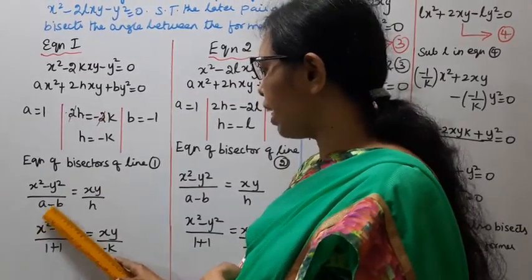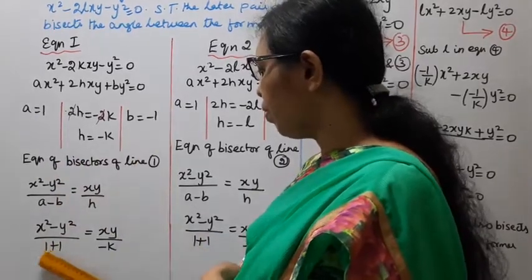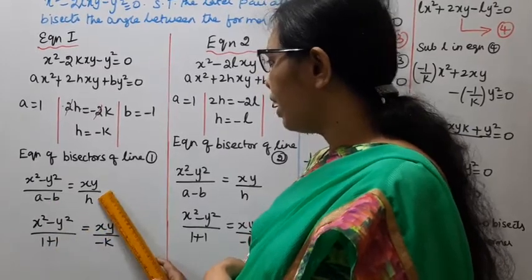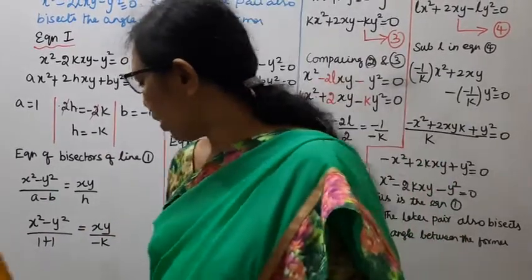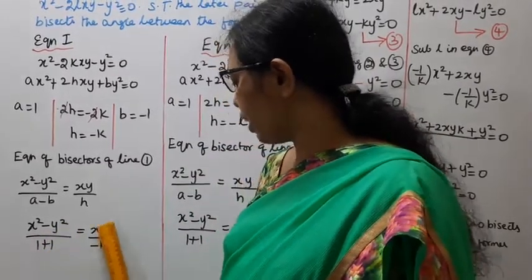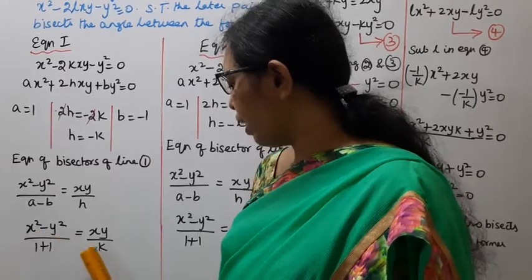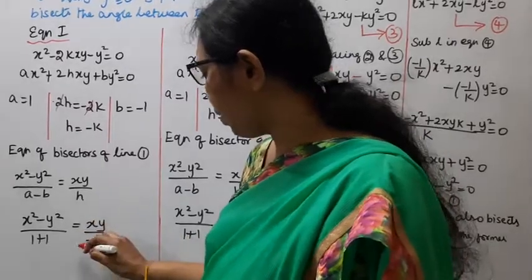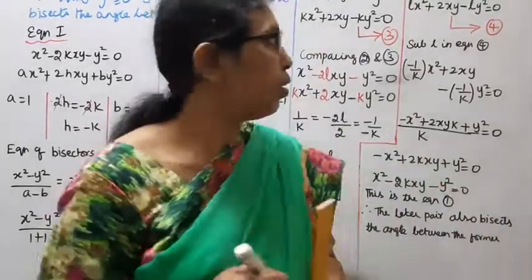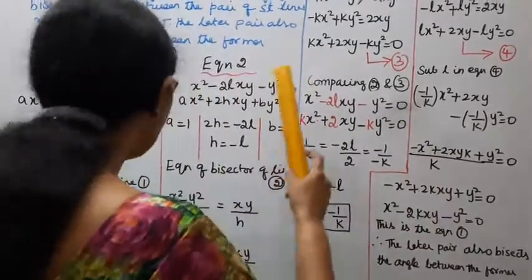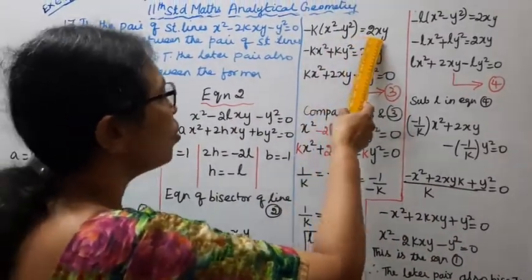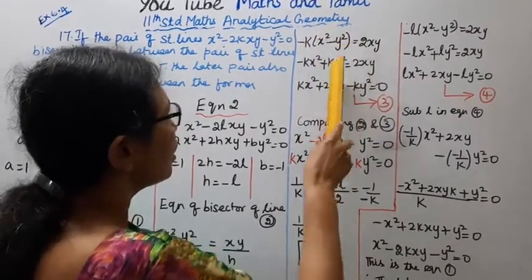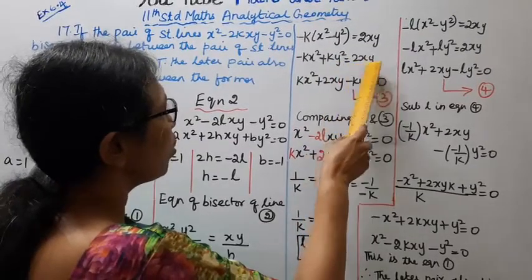Substituting x² - y² with a = 1, b = -1: 1 - (-1) = 1 + 1 = 2. So (x² - y²)/2 = xy/(-k). Cross-multiplying: -k(x² - y²) = 2xy, giving x² - y² = 2xy/(-k), so x² - y² = -2xy/k.